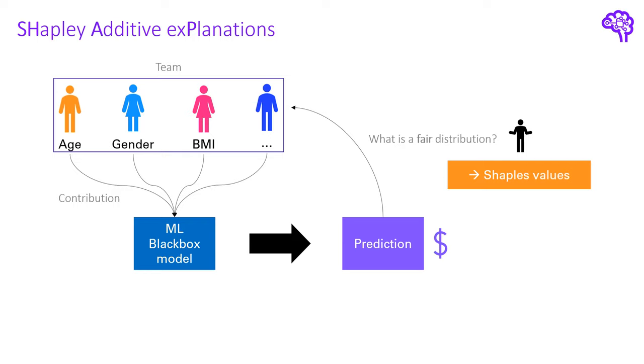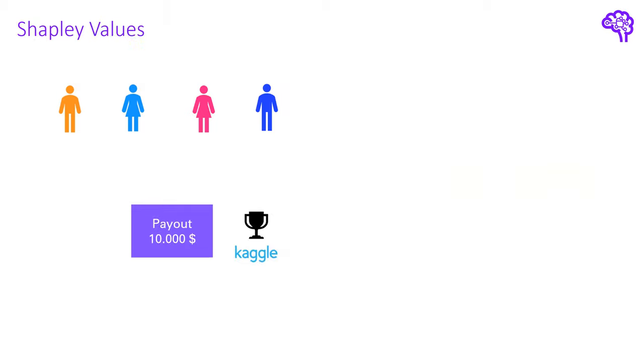We treat each feature like a player in a game and calculate Shapley values to find out their contribution in the black box model. The main intuition behind Shapley values is that we want to compare how the coalition would perform with versus without a specific player. This way we can find out how this person contributed in the game.